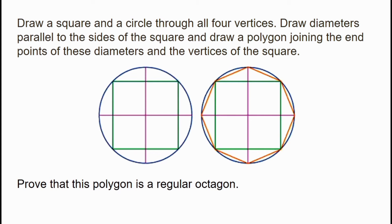We will show you a square and the four vertices, a circle and the square, the sides of the square, the diameter, the endpoints, the square and the four vertices, and the points joined together. This polygon — the path — is an octagon that we will show you now.